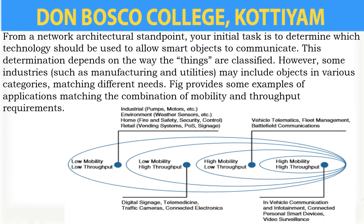Here we have a figure to provide some examples of applications matching the combination of mobility and throughput requirements. If the applications require low mobility and low throughput, then the application areas are industrial applications like pumps, motors, etc.